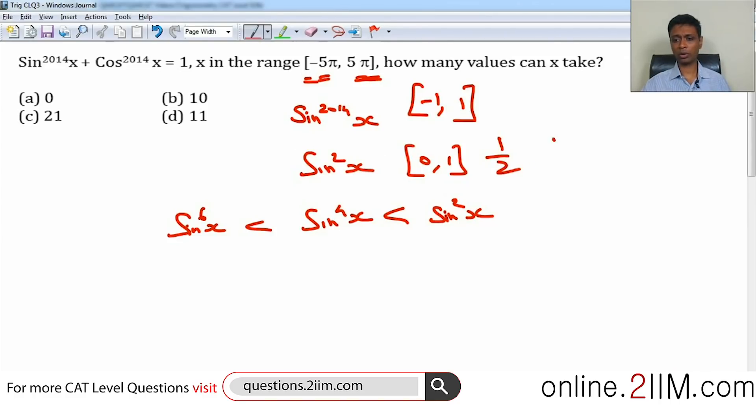Think about 1/2. 1/2 squared is 1/4, cube is 1/8, 1/16. It will become so small that it is practically non-existent. Now, the same thing will hold good for cos^2014(x).